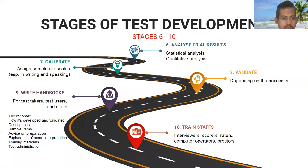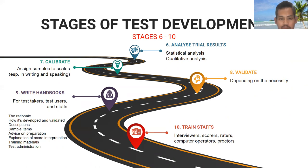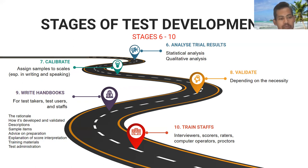Then we move on to stage six: analyzing the trial results. In the analysis, we can look at it from two points of view — statistical analysis and qualitative analysis. We have to analyze the results according to both approaches. Stage seven is calibration of scales, especially when we develop a writing or speaking test. We need to assign samples of responses to scales, defining whether a certain response falls into category A, B, C, or a numerical level — this is the calibration of scales.